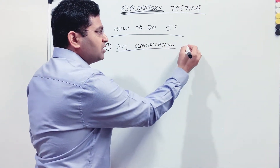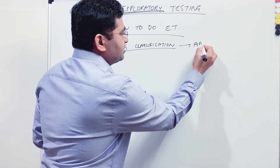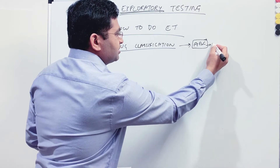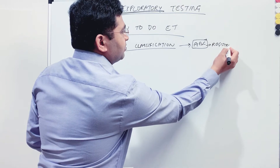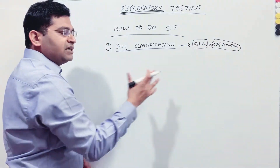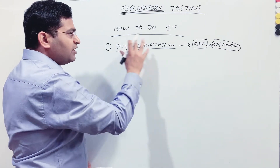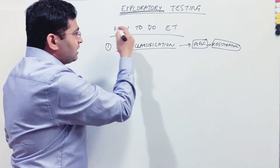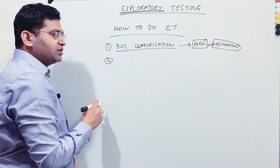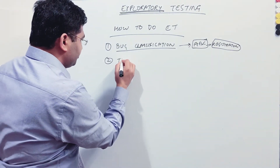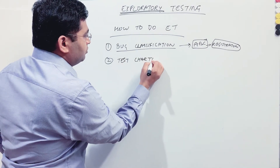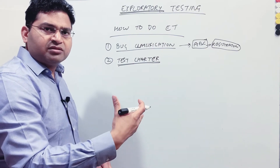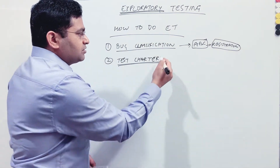For example, say module A, B, or C has the highest number of defects — in real terms, say the registration module of an e-commerce website. When we talk about bug classification, we classify those modules with the highest number of defects and then target those modules with exploratory testing. Based on that classification, you prepare a test charter. The test charter is very important — it is basically a single-page or couple-of-pages document with all the details.